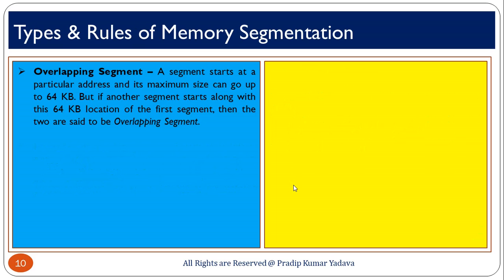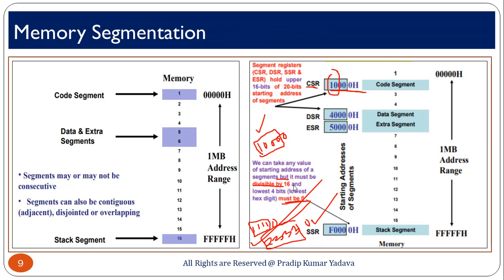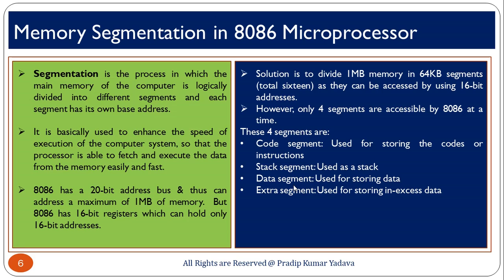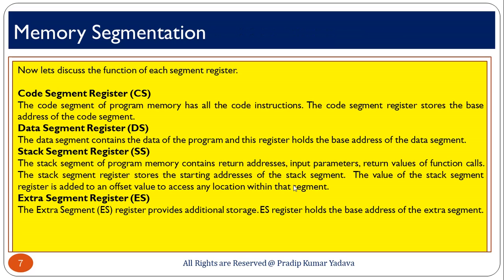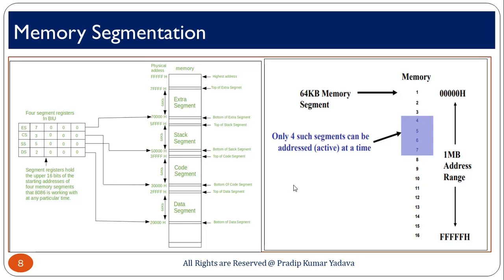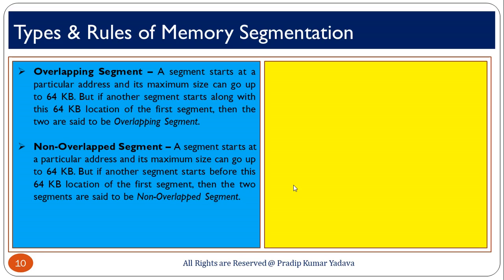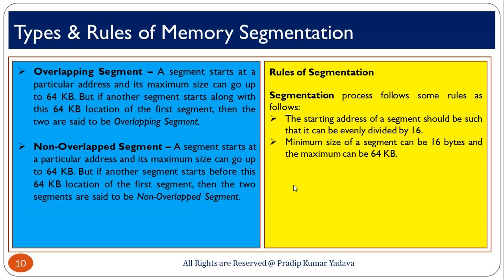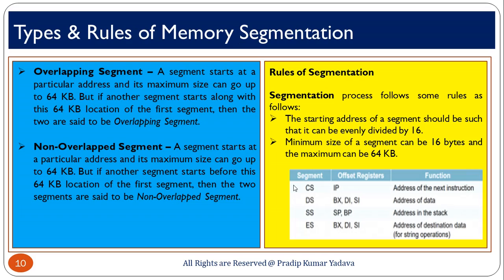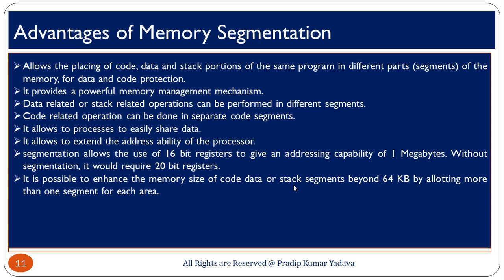Let me quickly recap the topic. Segmentation is the process to divide main memory into different segments, and it is generally used to enhance the performance of the computer. We have 4 segments for different purposes, the diagram shows how memory segmentation works, there are 2 types — overlapping and non-overlapping — and we have some rules for how segmentation is implemented. These are the advantages of memory segmentation. Hope you understood. Thank you for watching.